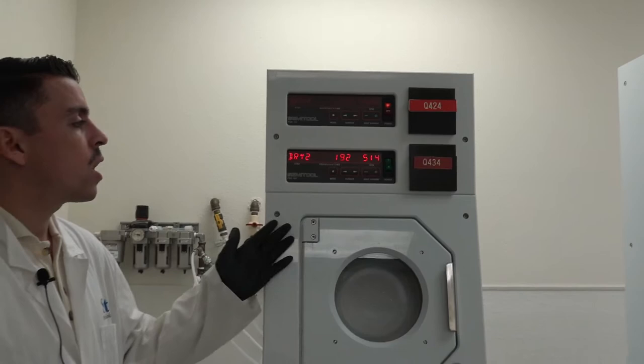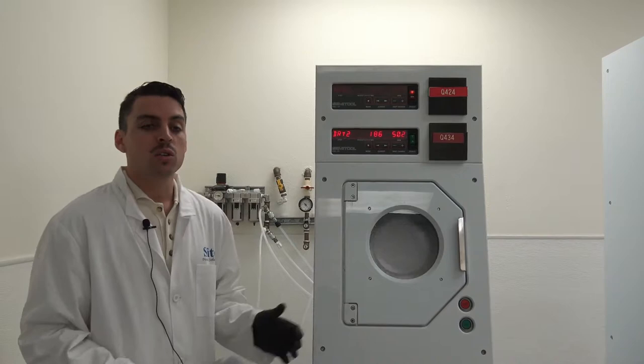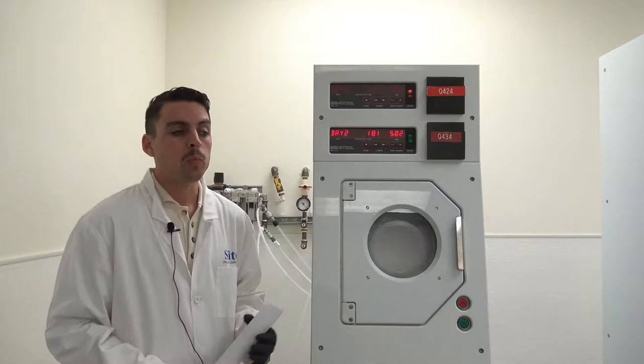Now we are moving into dry two, which is going to be our longer time, lower RPM dry cycle that allows the heating elements to provide a nice uniform dry to the substrates in the rinser dryer.